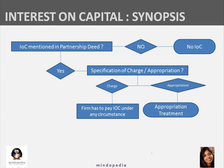Quick recap: For IOC, first check if it is mentioned in the partnership deed — yes or no. If no, nothing to do. If yes, check if it is a charge or appropriation. If nothing is specified in the question, appropriation wins. If it is a charge, the firm must pay IOC under any circumstance. If it is appropriation, apply the appropriation treatments as previously discussed.